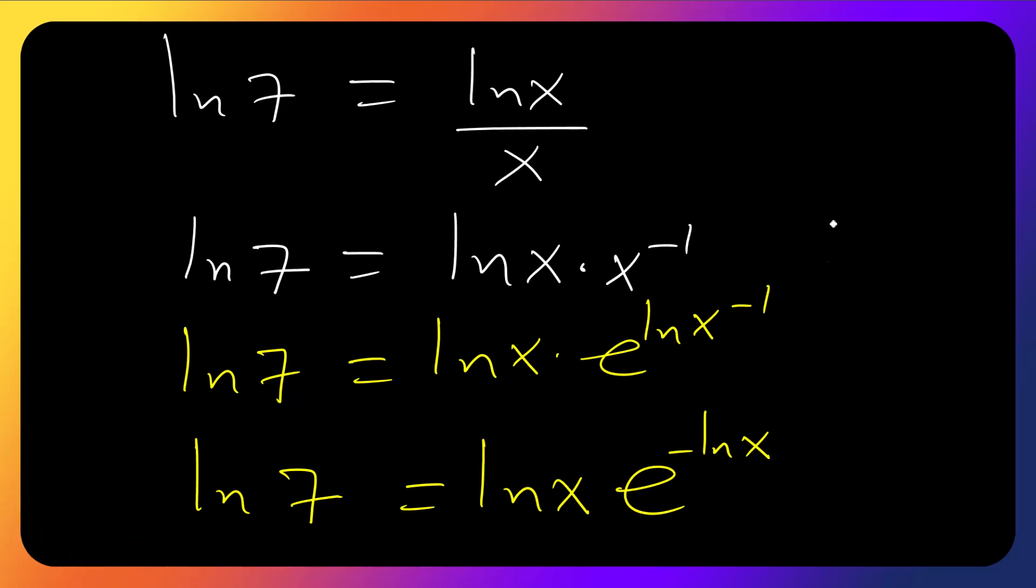The e is well introduced here. We are working towards this. We have minus ln x and this side is positive. Let's balance it by multiplying both sides by negative. So we have minus ln 7 equals minus ln x times e raised to minus ln x. Everything is set. We can take W function.